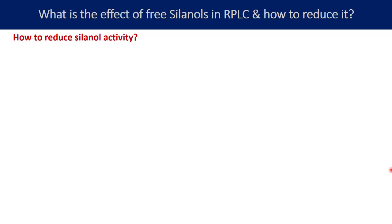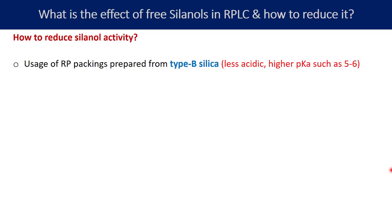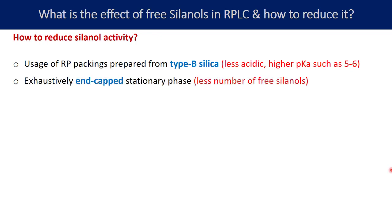How to reduce silanol activity? First, use Type B silica for manufacturing bonded silica columns. Type B silica is less acidic, with a pKa of around 5 to 6, and hence has less ionization at lower pH. Second, exhaustively end-capped stationary phases can help reduce silanol activity — end-capping involves adding smaller functional groups like trimethylsilane, which bond with the silanol groups, making them unavailable to interact with the analyte.